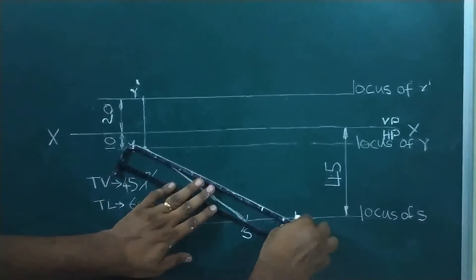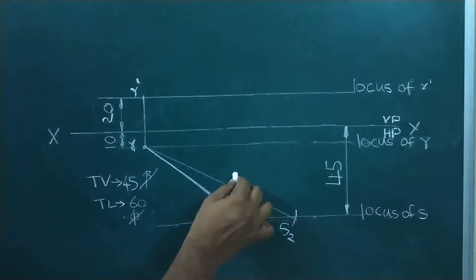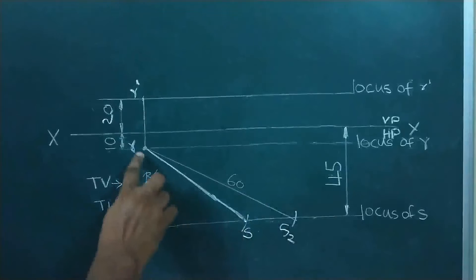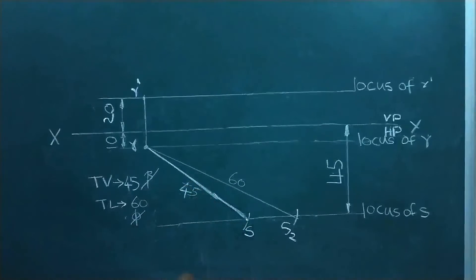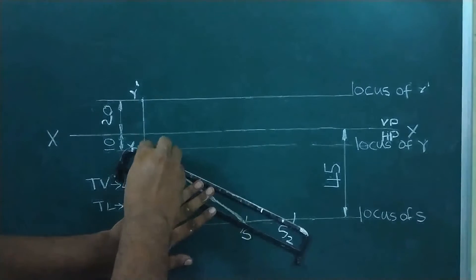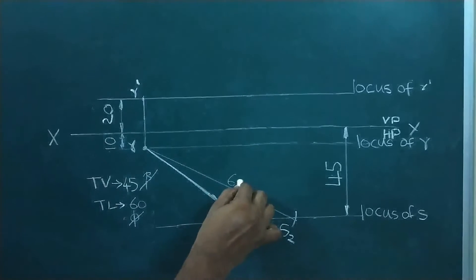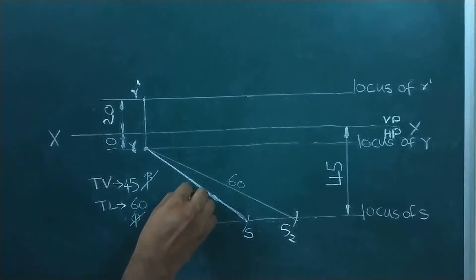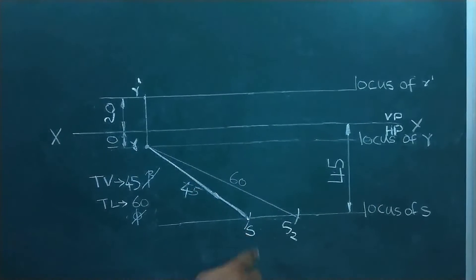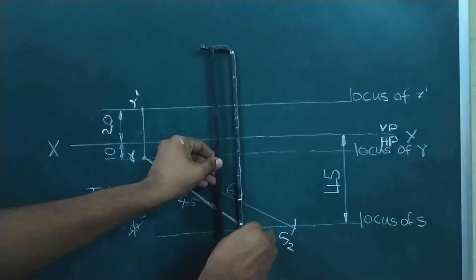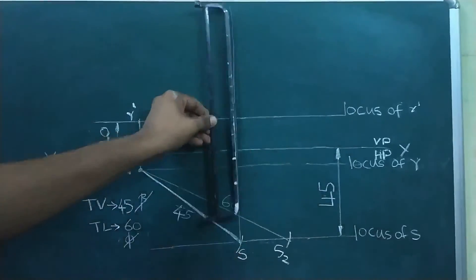Connect R and S2 with an H pencil — this is our top view true line. Up to now we have completed the given information. We have the top view line RS as well as the top view true line RS2. I am going with the top view line end point S to continue the diagram. From point S draw a vertical projector line and just extend it, because we don't know the locus of S-dash.